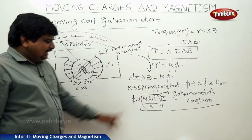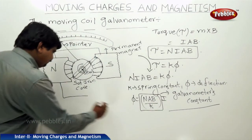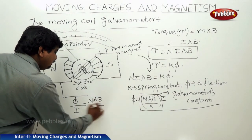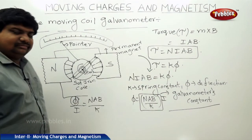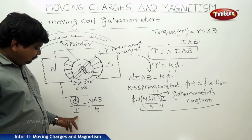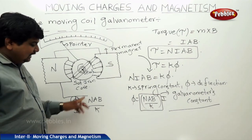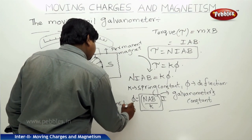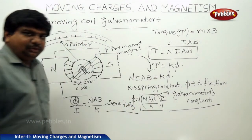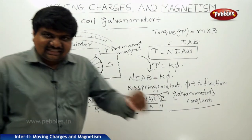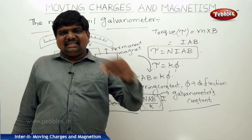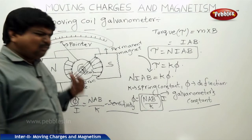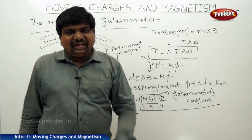Sensitivity means deflection per unit amount of current. Therefore phi divided by I equals N·A·B divided by K, where phi is the deflection. The amount of deflection per unit current applied is equal to sensitivity. A galvanometer is a sensing device which can sense the direction of current in a circuit, as well as small amounts of current passing through a circuit element.